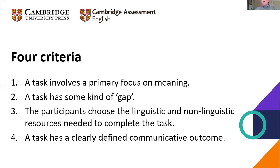The third criterion is perhaps the central one: in task-based language teaching, you don't teach learners the language they will need to do the task. Rather, you leave it up to the learners to use whatever language they have — and not just language, but also gesture and facial expression — in order to try to communicate what they want to say. So this refers to allowing students to choose their own linguistic and non-linguistic resources. And finally, there must be a clearly defined communicative outcome — the outcome must not simply be whether the student used correct language, but must satisfy some communicative purpose.